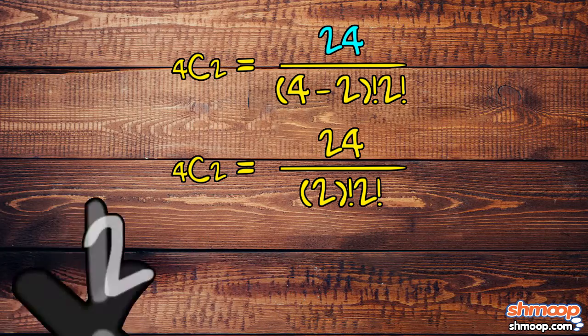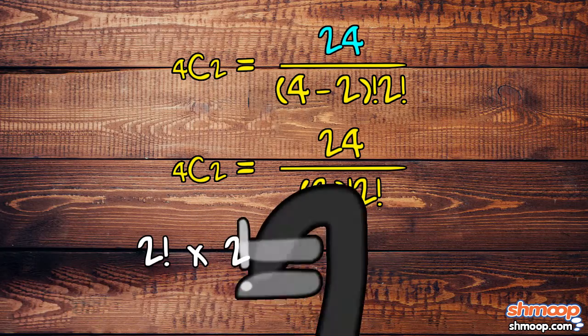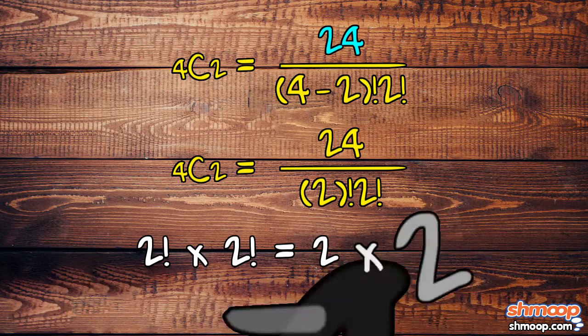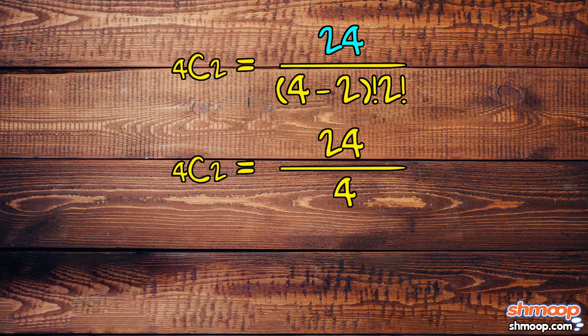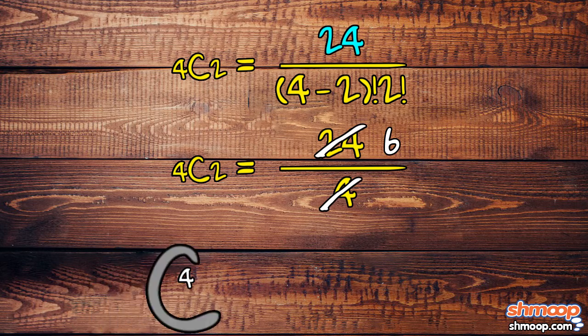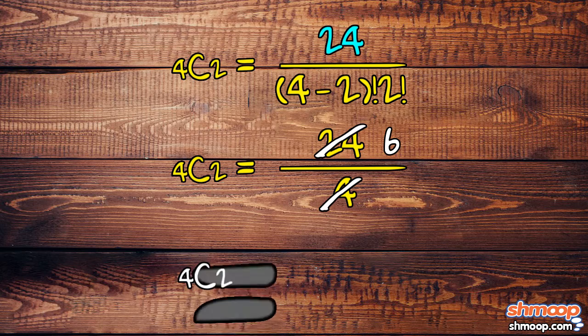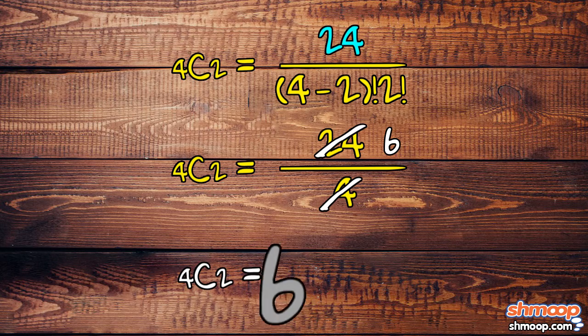2 factorial times 2 factorial is 2 times 2, which is just 4. 24 divided by 4 is 6, so the number of two-item combinations Clark could have is 6.